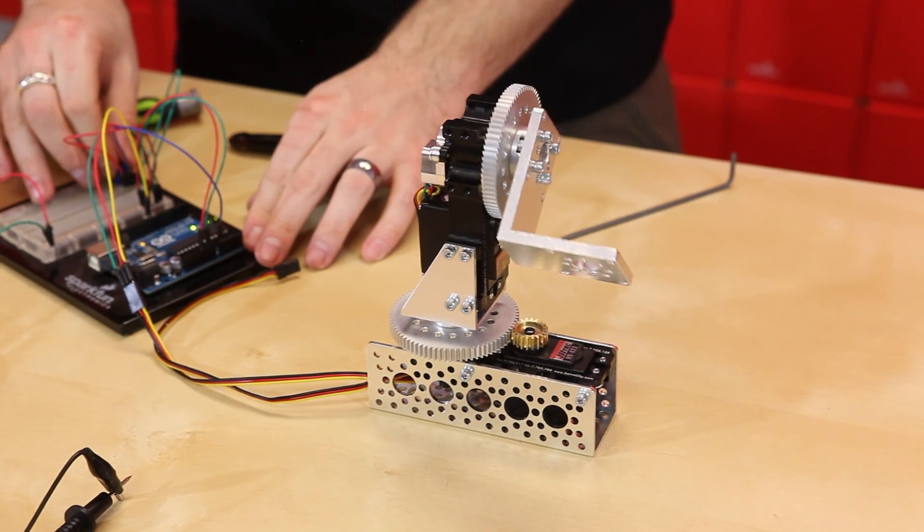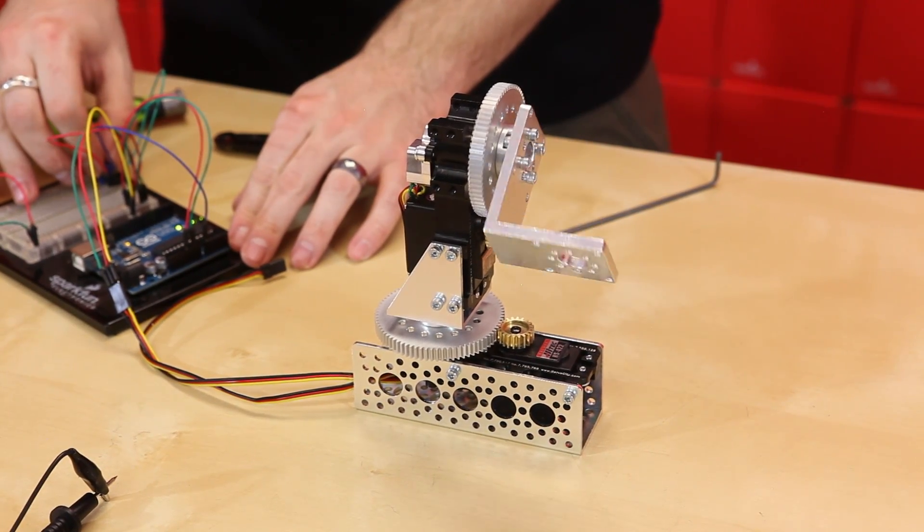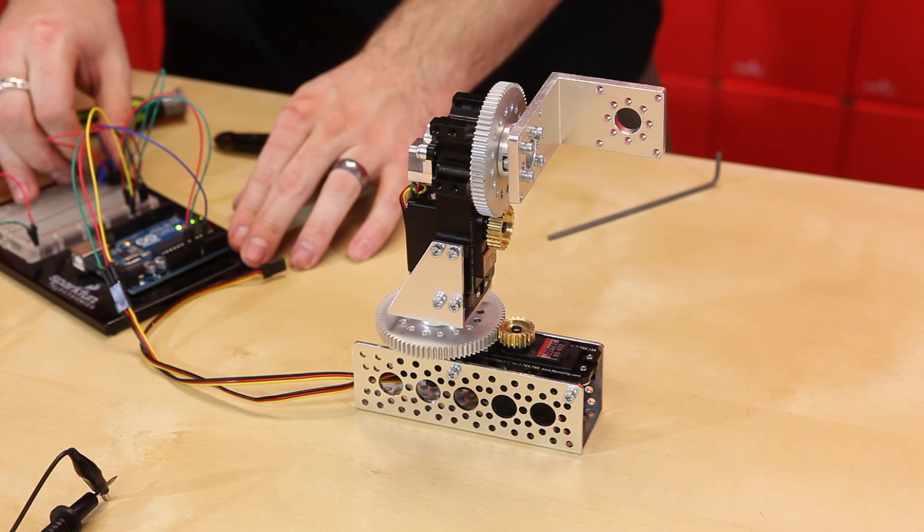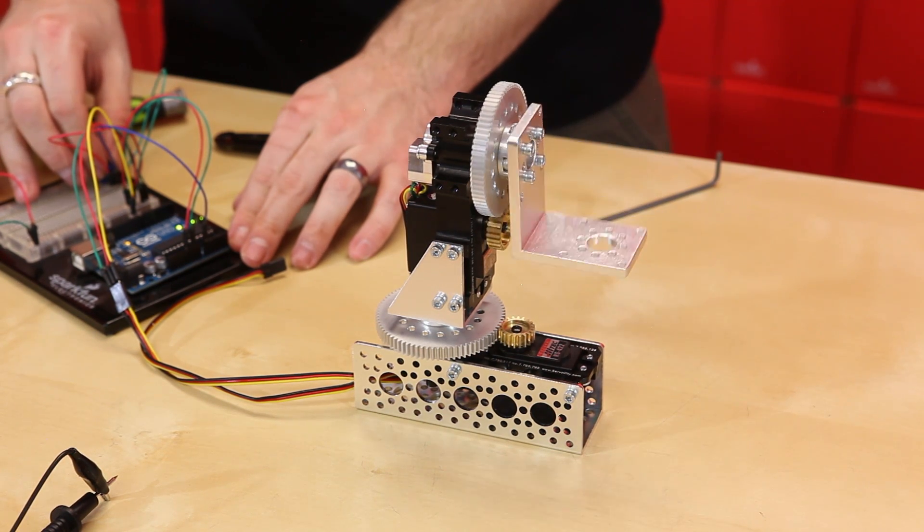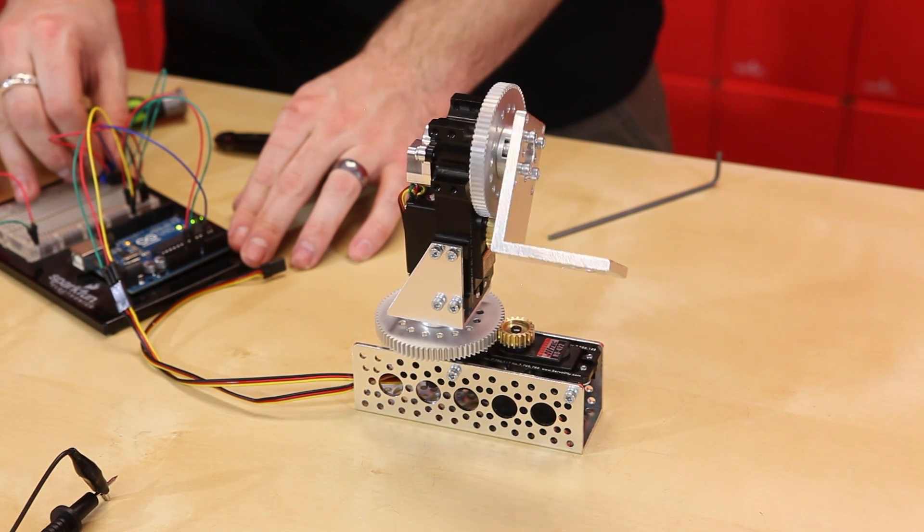Now if we do a full sweep, we've got full range of motion. That is how you hack a servo for an external control loop.